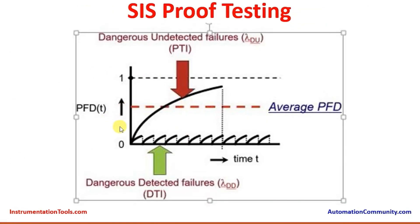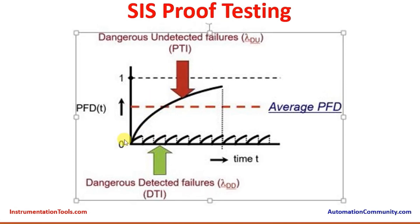Here we will go over a graph depicting how proof testing can improve system reliability. On the x-axis we have time running, and on the y-axis we have the probability of failure on demand. As time increases, the probability of failure on demand goes on increasing, so the possibility of dangerous failures increases. For each system there is an average PFD which is to be maintained, and if we fail to perform the proof test in time there is a chance of getting dangerous undetected failure. Whenever we do the proof testing as per the calculations and perform proper maintenance, the healthiness and reliability of the system is ensured.